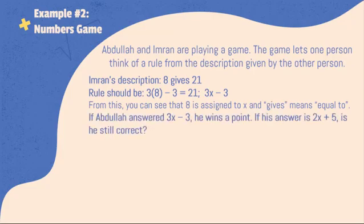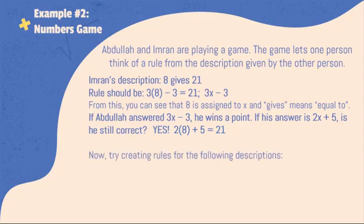If Abdullah answered 3X minus 3, he wins a point. If his answer is 2X plus 5, is he still correct? Yes. Because 2 times 8 plus 5 is still equal to 21. Now, try creating rules for the following descriptions.